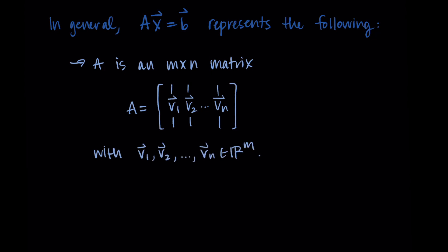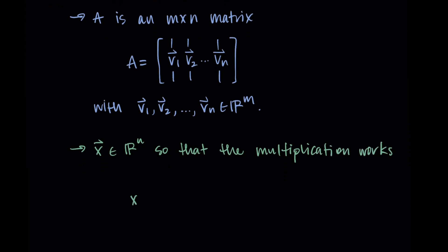This makes the matrix A an m by n matrix. Then for our x vector, we think of x as being an element of R^n and it needs to be an element of R^n so that the multiplication works.